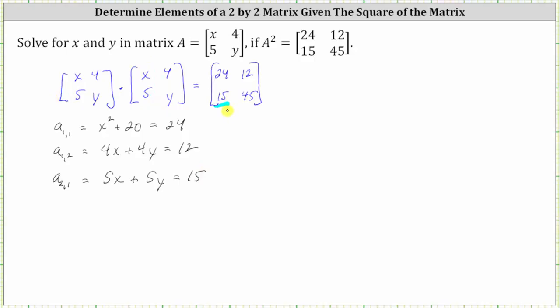The last element in the product is in row two, column two, which means we need to multiply row two in the first matrix by column two of the second matrix.